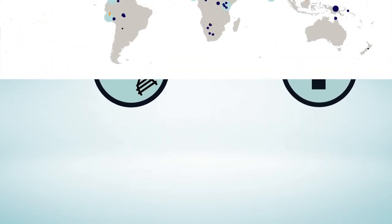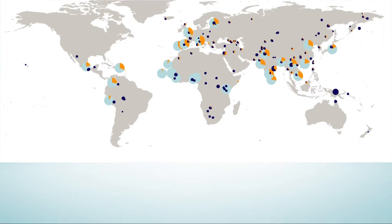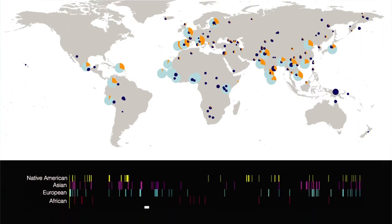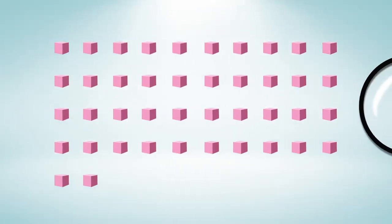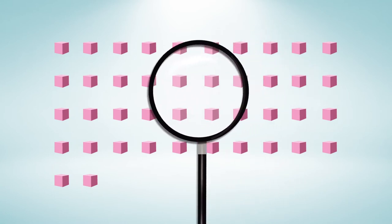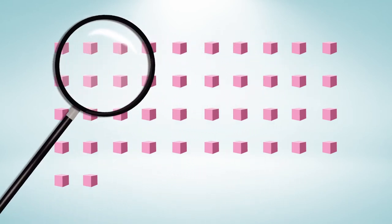Scanning the genomes of hundreds of people living today, the researchers were able to precisely identify and locate Neanderthal DNA fragments in modern humans. Using this genetic map, they looked for associations between these fragments and gene expression levels in 48 human tissues.